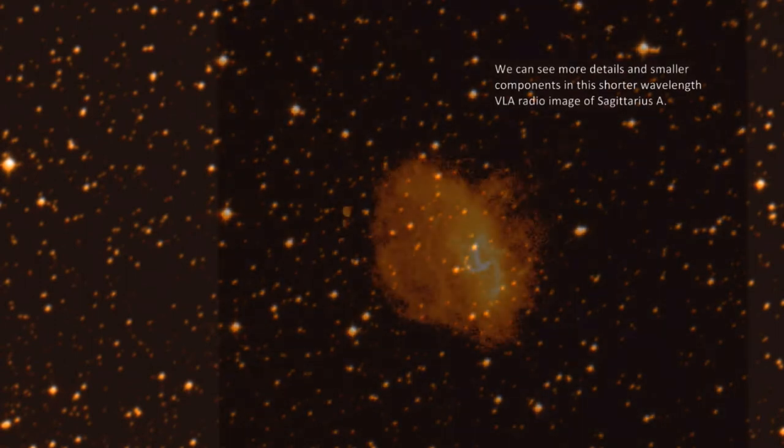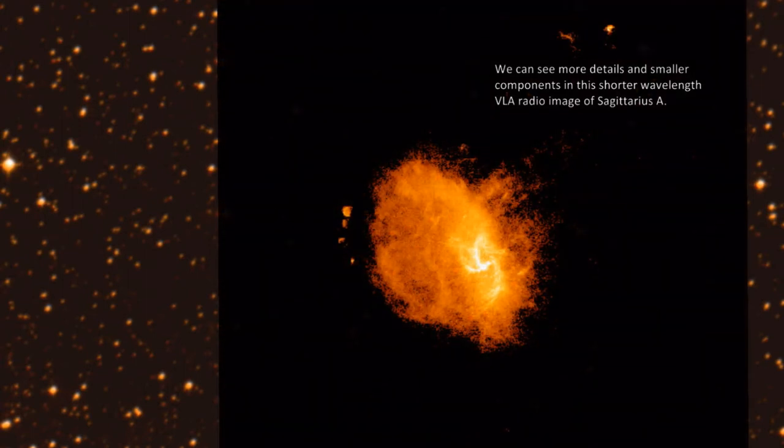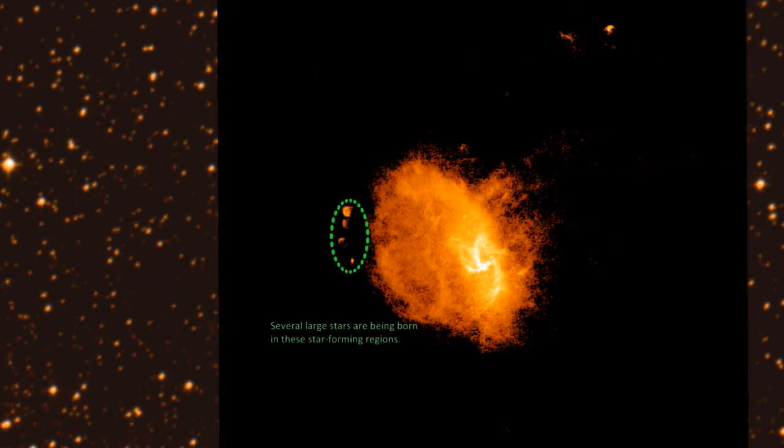We can see more details and smaller components in this shorter wavelength VLA radio image of Sagittarius A. Several large stars are being born in these star-forming regions.